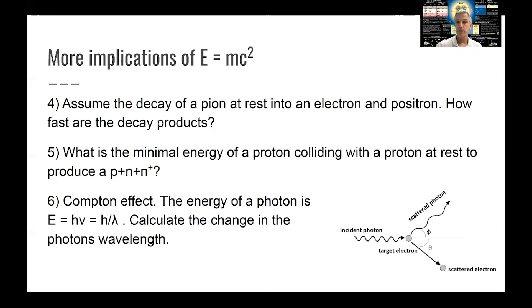And then the last one is the so-called Compton effect, where you have a photon which scatters off an electron target. And so you have an incoming photon, an electron is at rest. And then you look at the scattered photon angle, scattered electron angle. And in that collision, the energy of the photon is going to change. So the energy of the photon is h times nu, or h over lambda, the wavelength. And so the question is, how does the wavelength of the photon change in this kind of collision?